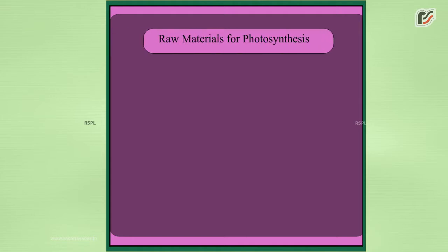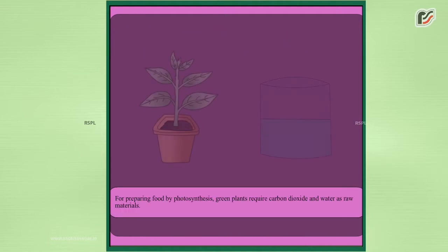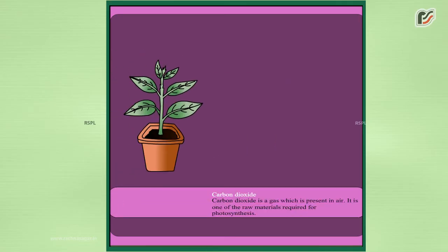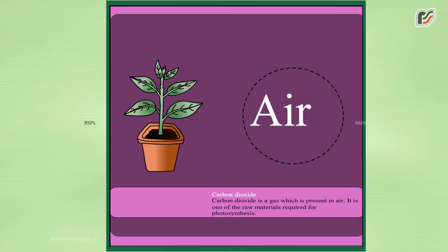For preparing food by photosynthesis, green plants require carbon dioxide and water as raw materials. Carbon dioxide is a gas which is present in air, and it is one of the raw materials required for photosynthesis.